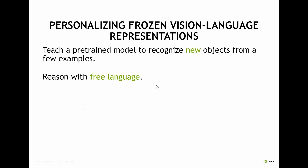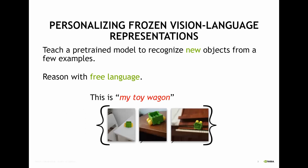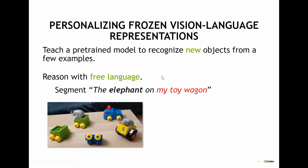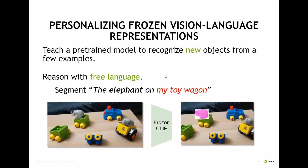For example, this is my toy wagon — my personal object — and I have a few photos of it. I want a model to identify the elephant on my toy wagon. Notice that we have another wagon like it, so we must use the elephant concept, but we also have another elephant on another wagon, so we must recognize my wagon specifically.